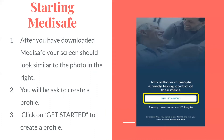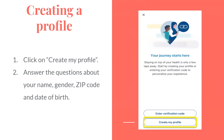Starting MetaSafe. After you have downloaded MetaSafe, your screen should look similar to the photo on the right. You will be asked to create a profile. Click on Get Started to create a profile, then click on Create My Profile. Answer the questions about your name, gender, zip code, and date of birth.